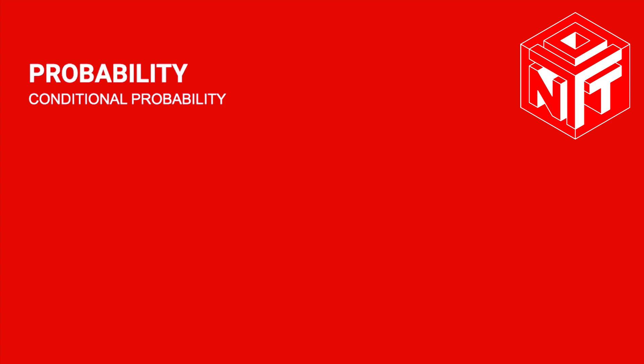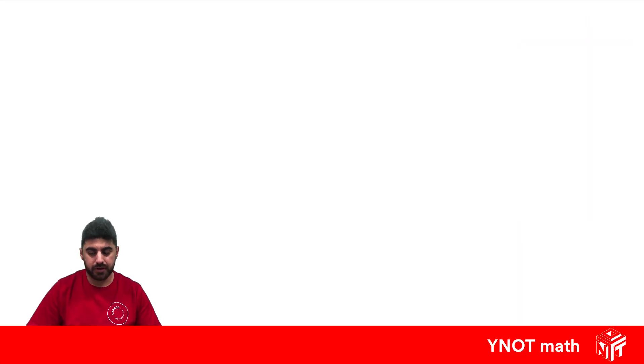Conditional probability. Conditional probability is where you get extra information to rule out some possibilities.